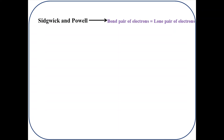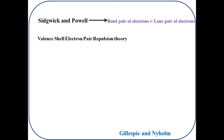The unfortunate part of the Sidgwick and Powell theory was that although it could explain many molecules, they took the bond pairs as well as the lone pairs of electrons as equivalent — there was no difference between the two. This ultimately could not explain the existence of many molecules. Then in 1957, Gillespie and Nyholm improved and redefined the Sidgwick and Powell theory to predict and give a more exact explanation of molecular shapes and bond angles, giving rise to the VSEPR theory.